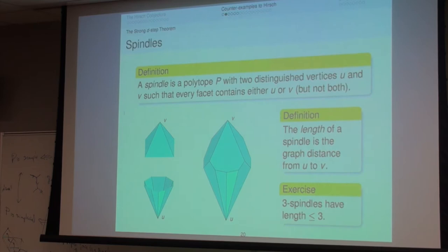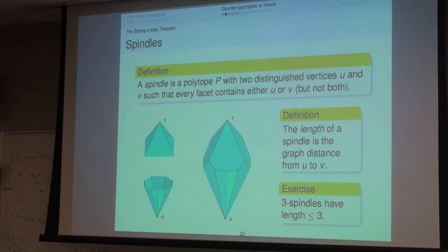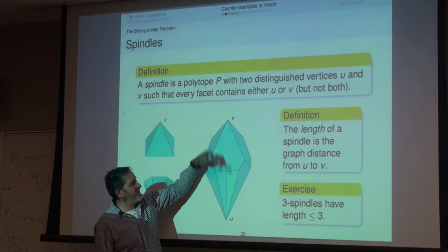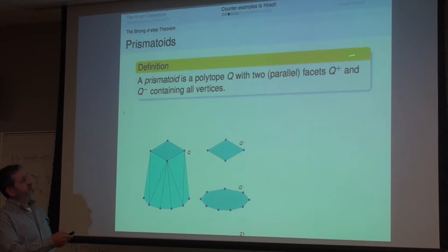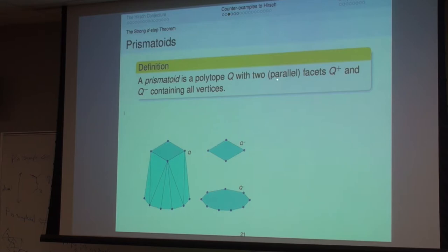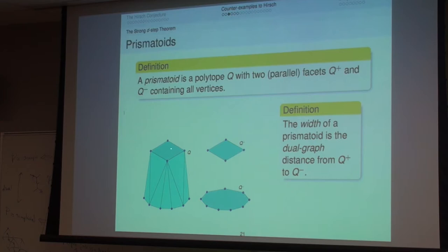Now I apply duality: the dual definition of a spindle is a prismatoid — a polytope that has two parallel facets containing all vertices. The width of the prismatoid is the distance in the dual graph between these two special facets. For example, in a three-dimensional prismatoid you need three steps to go from the top facet to the bottom facet — three-dimensional prismatoids have width 3. This is the same question as before by duality.